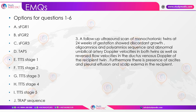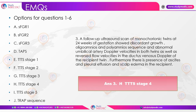EMQ case 3: A follow-up scan of monochorionic twins at 24 weeks shows discordant growth, oligo-poly sequence, abnormal umbilical artery Doppler velocities in both twins, reversed flow in the ductus venosus of the recipient twin, and features of hydrops including ascites, pleural effusion, and scalp edema. Since oligo-poly sequence confirms TTTS and the recipient has features of hydrops, this is TTTS Stage 4.